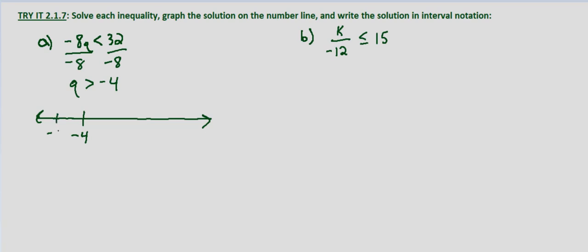So there's negative 4, here's negative 5, negative 3, negative 2, negative 1, 0.